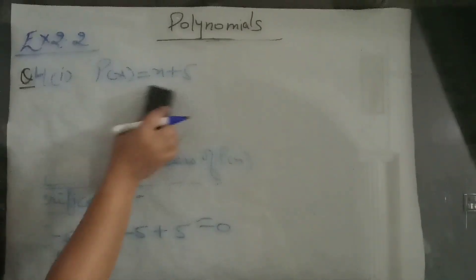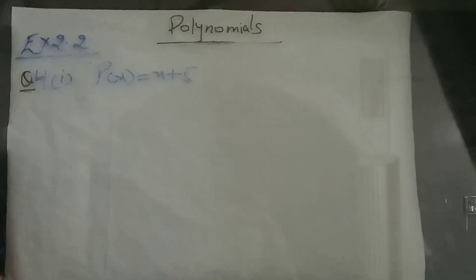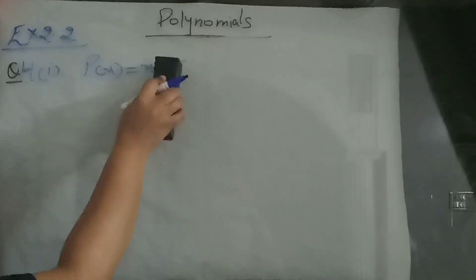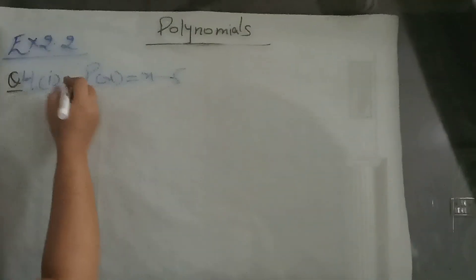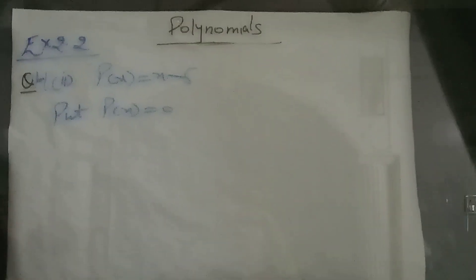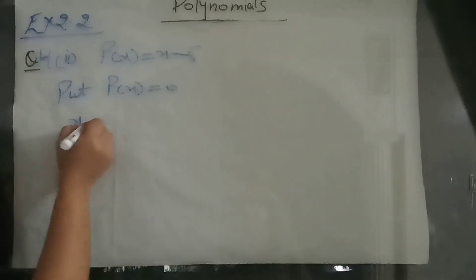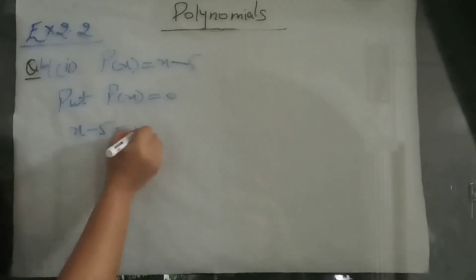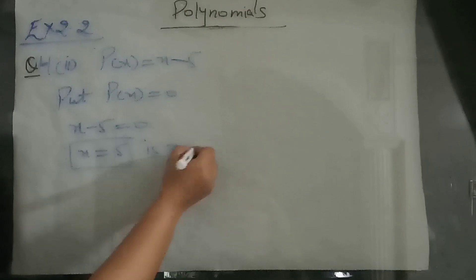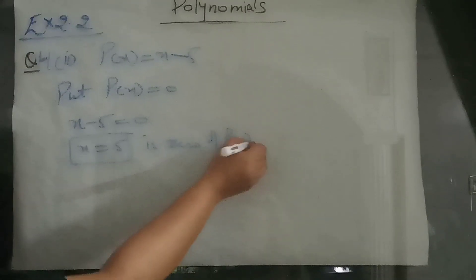Second part: p of x is x minus 5. Put p(x) equal to 0 — remember, for finding the zero of the polynomial, put p(x) equal to 0. So x minus 5 equal to 0 gives x equal to 5. So 5 is the zero of p(x).